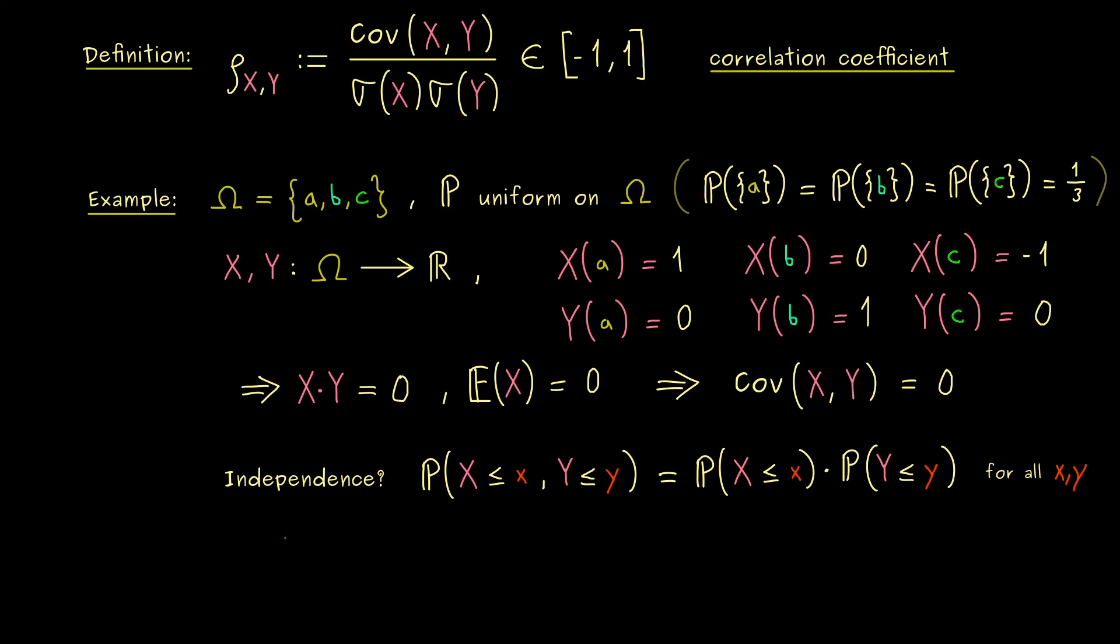Therefore, I would say, let's test what happens if we set x to minus 1 and y to 0. Then, on the left hand side, let's put in all the elements of omega that fulfill both inequalities. And there we see, this is only fulfilled for C. Only there, X is sent to minus 1.